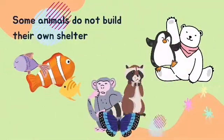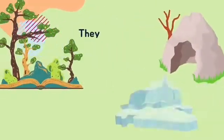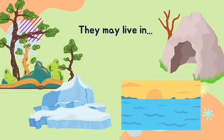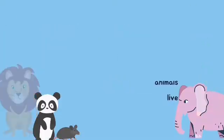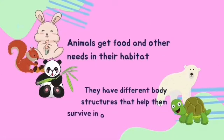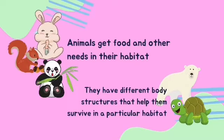Some animals do not build their own shelter and do not have owners to provide them shelter. They may live in forests, Arctic areas, caves, or oceans. Animals live and grow in different places. The place where animals live is called a habitat. Animals get food and other needs in their habitat. They have different body structures that help them survive in a particular habitat.